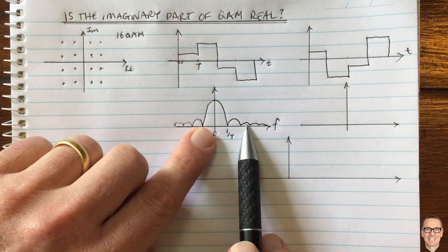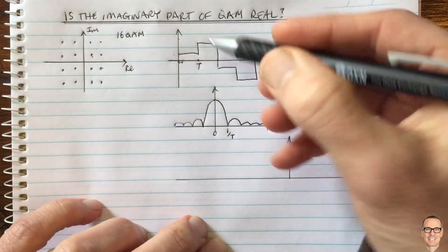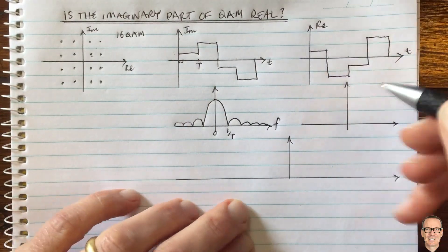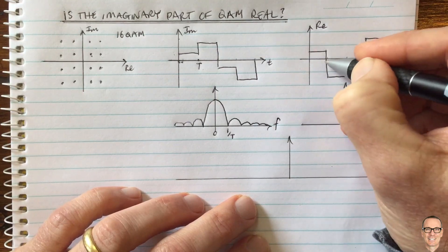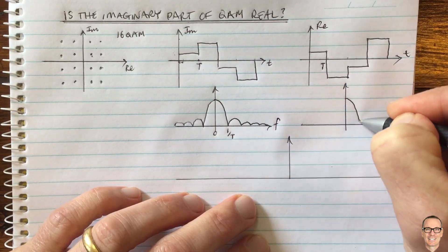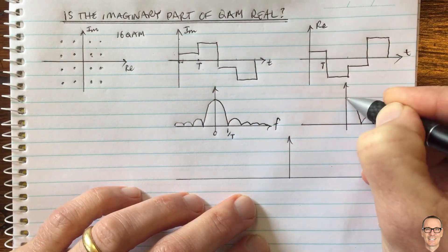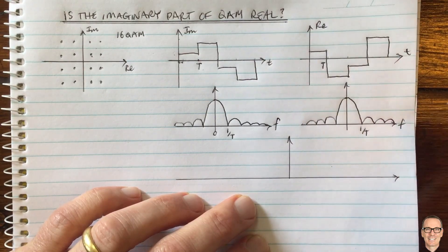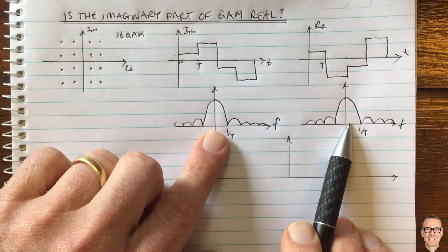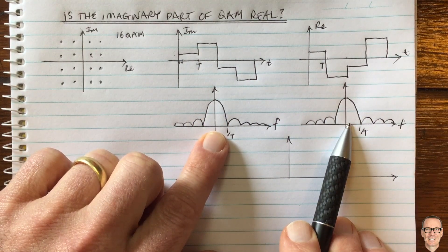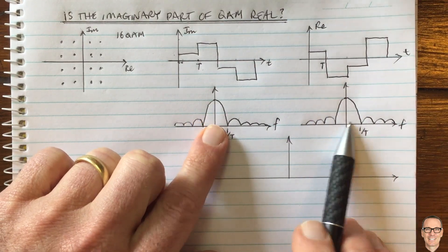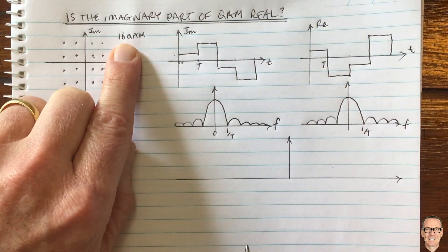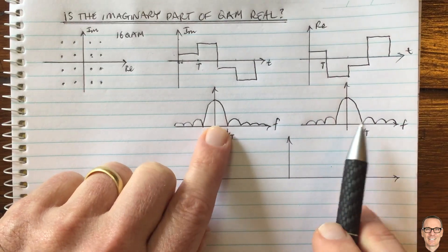If we send faster — if T is smaller — then one over T is bigger and we need more bandwidth. The imaginary component and the real component both change at rate T, so they both occupy the same frequency band at baseband. Therefore we have a problem: if we want to send both of these at baseband at the same time, how do we do it? The answer is: we don't send at baseband.